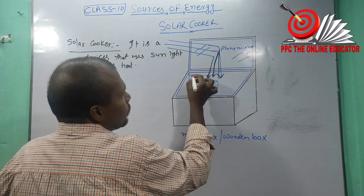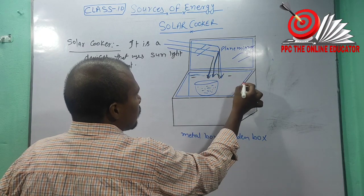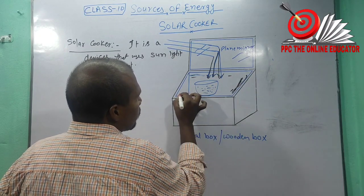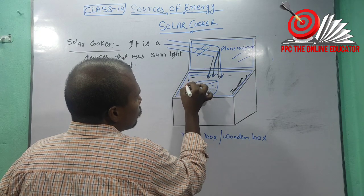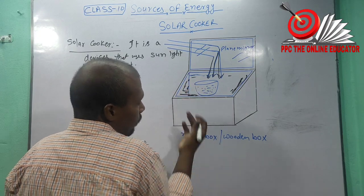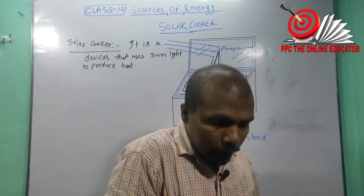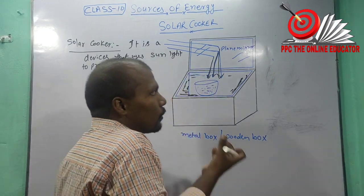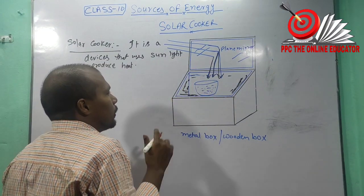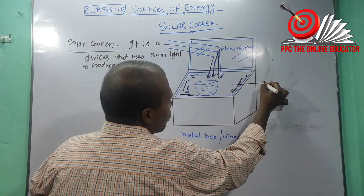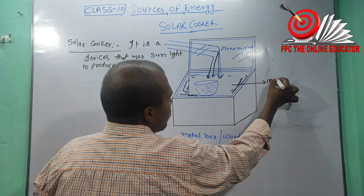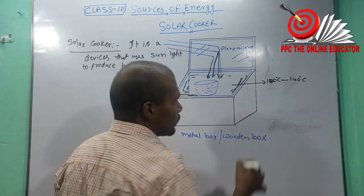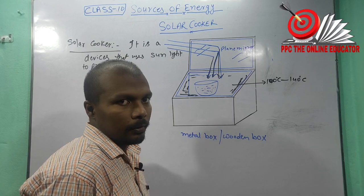The black colored inside region absorbs the sun rays, and this causes the temperature to rise from 100 degrees Celsius to 140 degrees Celsius.